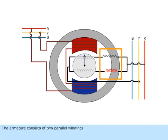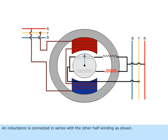The armature consists of two parallel windings. A resistance is connected in series with one half winding. An inductance is connected in series with the other half winding as shown.